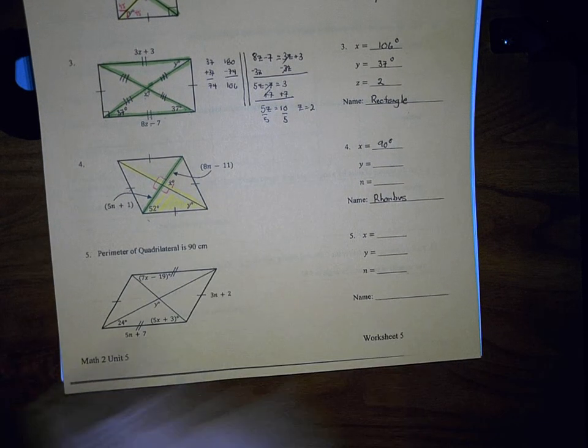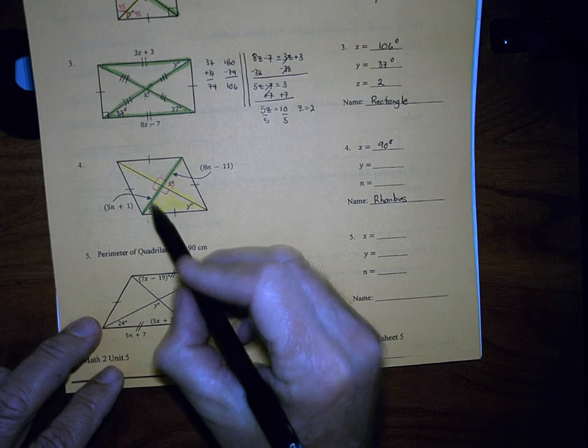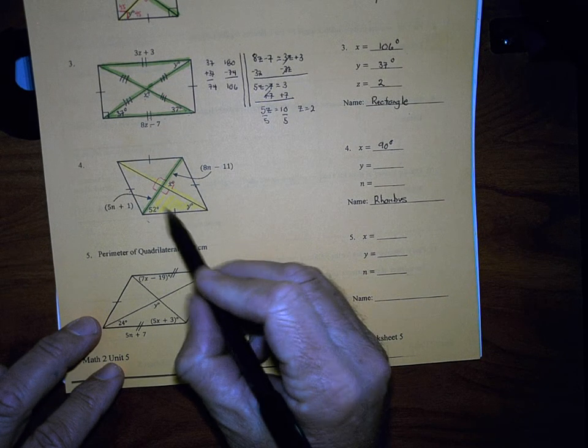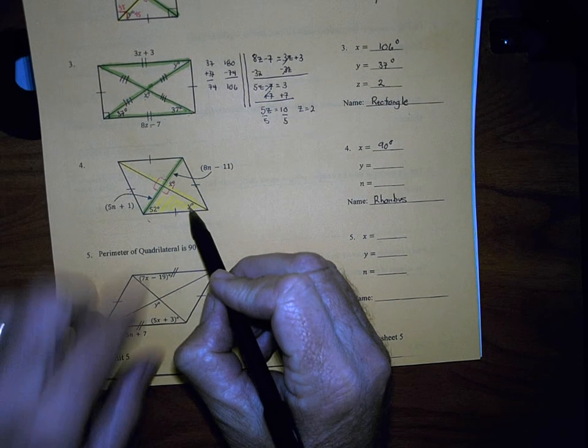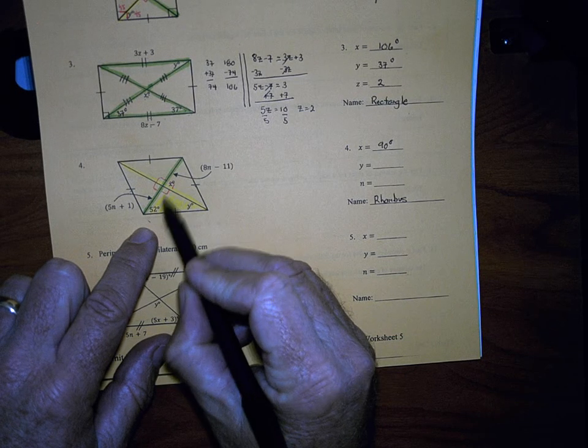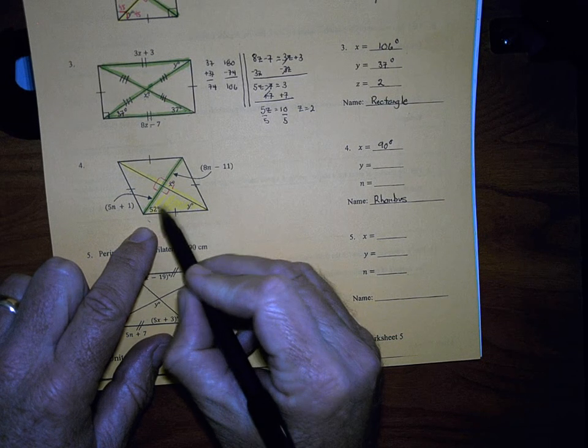Now we're going to find the value of Y, and we're using this triangle here, which I had colored up into yellow. Remember the three angles of a triangle add up to 180 degrees.